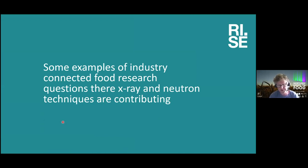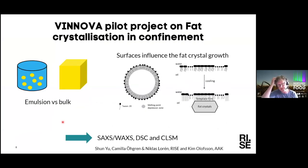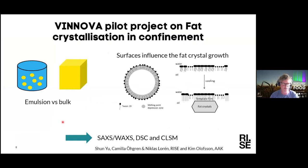Now I would like to share some examples of how we can use these techniques to understand food material. This comes from a Vinnova pilot project, where we would like to understand how the fat crystal structure is influenced by confinement — because if we put fat into a confinement like a fat droplet, it will influence the fat crystallization. The surface and geometry start to play a role, which is important for properties of foods like ice cream. We combine SAXS/WAXS measurements with DSC and confocal microscopy. This is work together with Shun Yu, Camilla, and Kim Olosson at AAK.